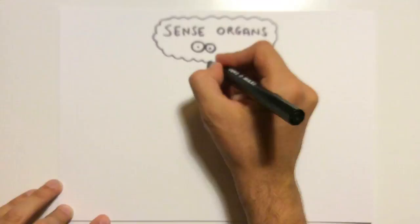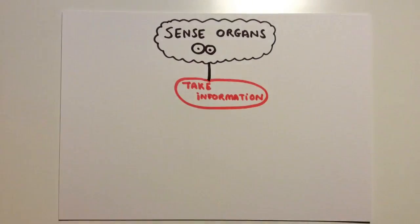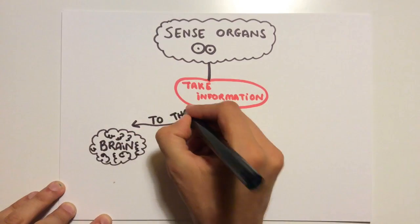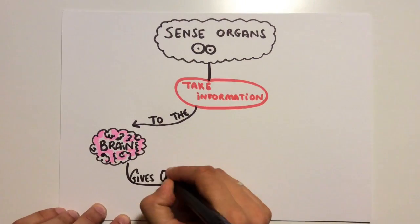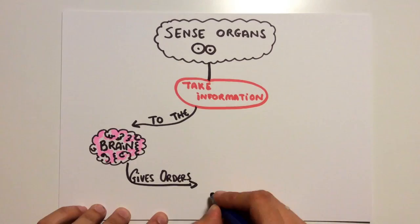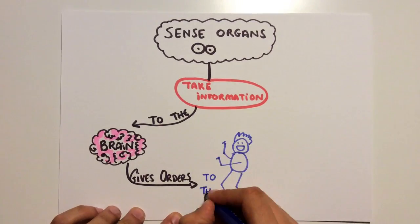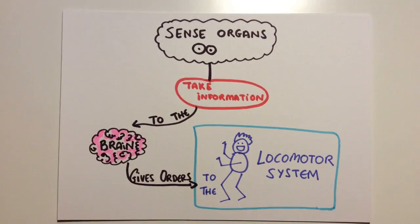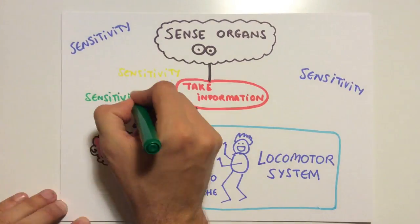So, the sense organs capture the information from the stimuli and take it to the brain. After that, the brain gives orders to the locomotor system. And this is how sensitivity works.